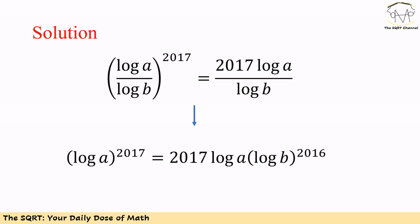After this multiplication, we have log A to the power of 2017 is equal to 2017 times log A times log B to the power of 2016. Note that since B cannot be 1, log B cannot be 0, which is why we could safely multiply both sides by log B.